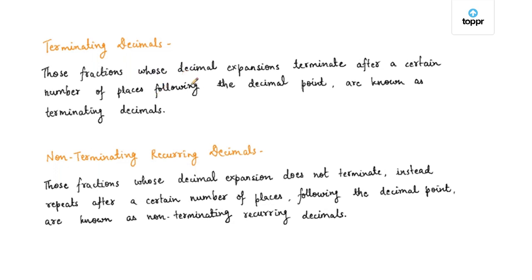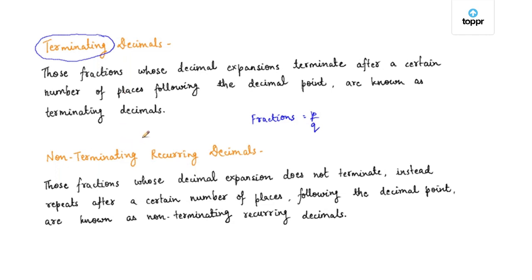Since all fractions can be represented in the form p by q, they are all rational numbers. So if the decimal expansion of any number is terminating type or non-terminating recurring type, then the number is a rational number.